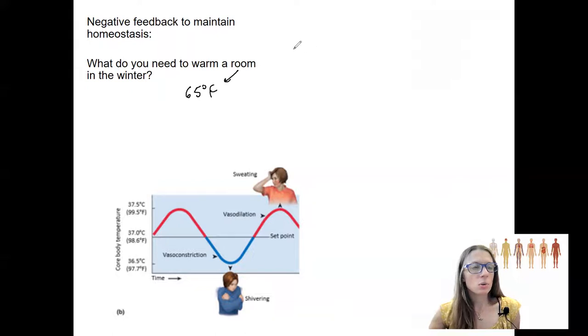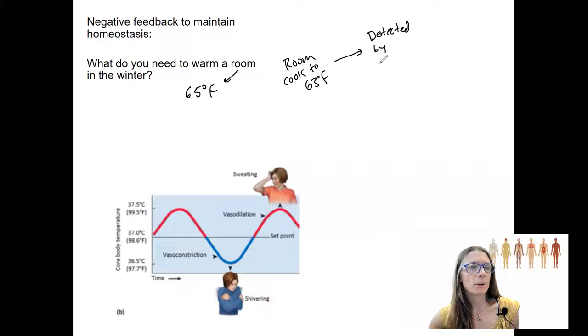So let's say your room cools down to 63 degrees. What do you want to have happen? You want to have this thing that you might know is called a thermostat to detect it. Literally detected by a thermometer in the thermostat. So a thermometer is going to detect this. And what does a thermostat do? Well, assuming you have a furnace, maybe you have something else fancy. So turn on furnace.